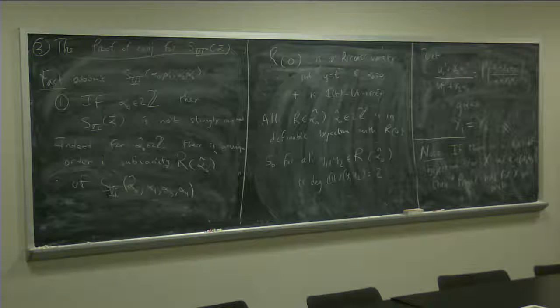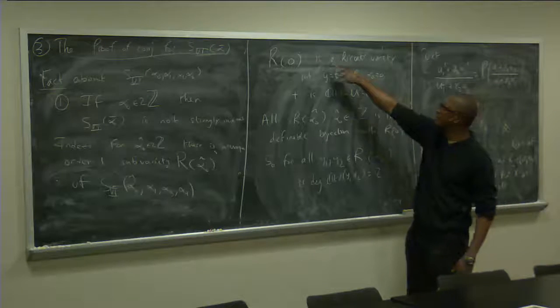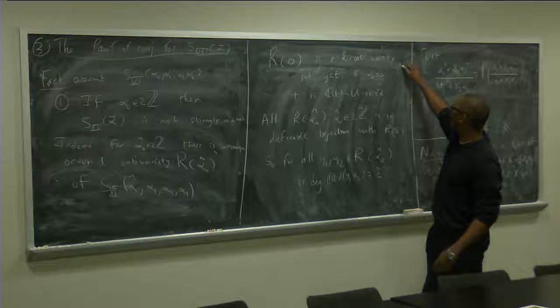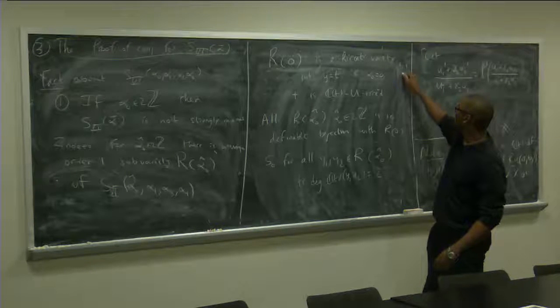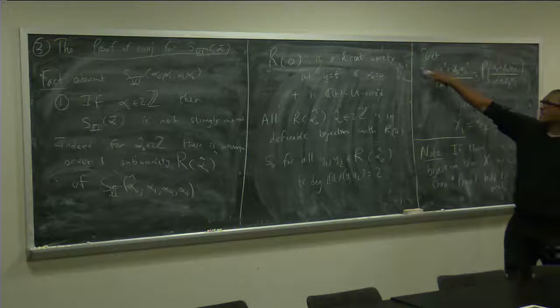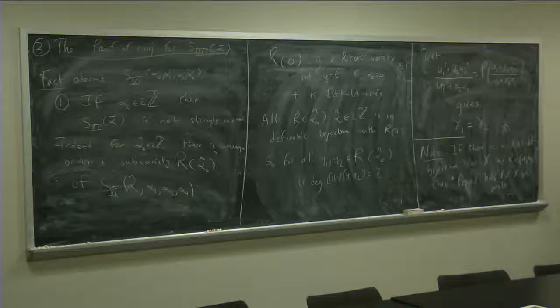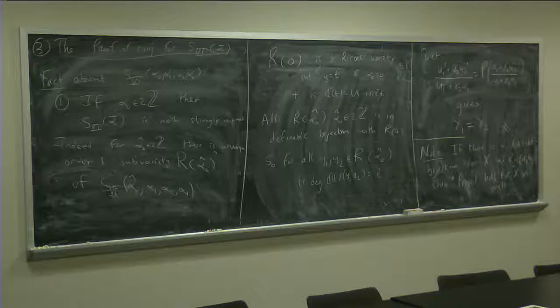note that one has to be sort of careful because here we're working with a system, right? And so, when we say Riccati variety, we have, for example, the Riccati variety. Remember, it was Y prime equals 1 and then X prime equals the Riccati expression. One just has to be careful. So, everything follows through in terms of transcendence degree and so on and so forth, right?